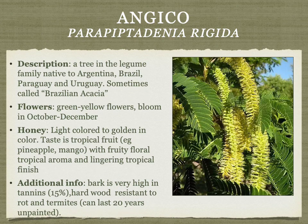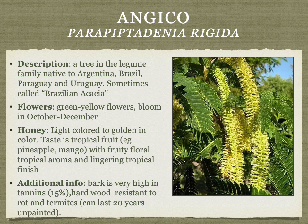Angico is a tree in the legume family that honeybees like to work for pollen and nectar. Sometimes called Brazilian acacia, it's related to but not exactly the same as acacia. The honey is light colored to golden, with tropical fruit notes, fruity floral aroma, and a lingering tropical finish. The hardwood is resistant to rot and termites, which is important in tropical building.